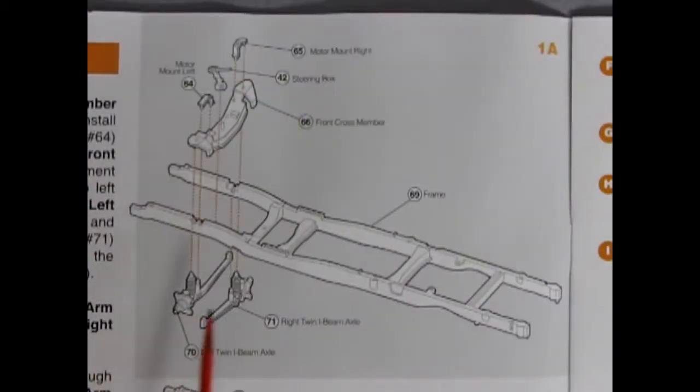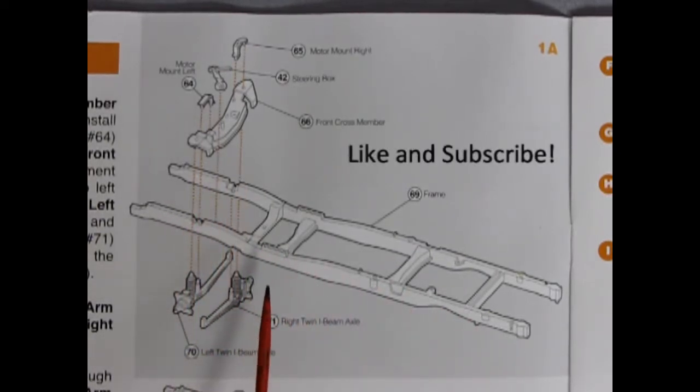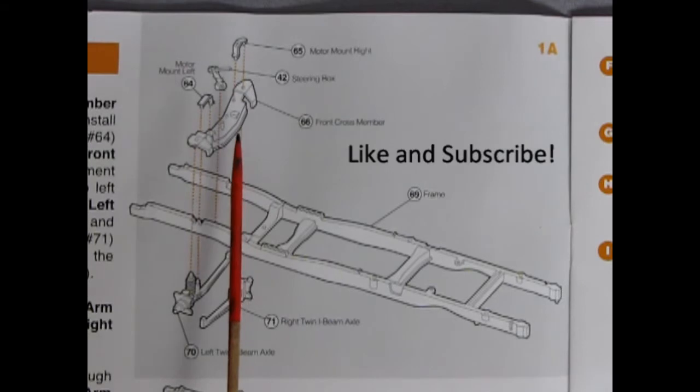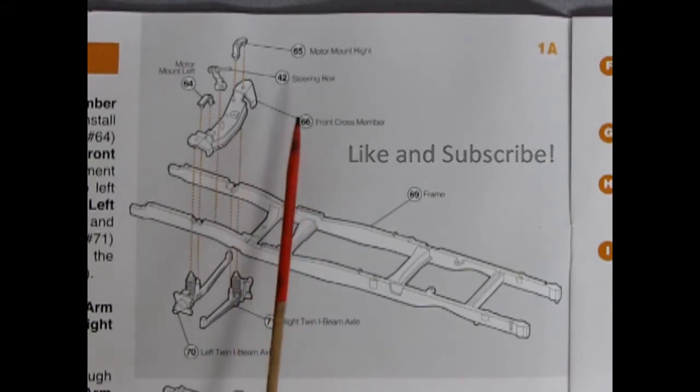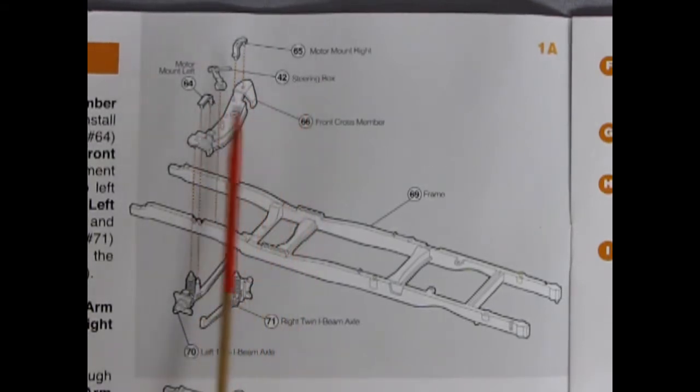Here we have the beautiful chassis. The frame here which reminds me of the same building style as the AMT 1953 Ford pickup truck. As you can see there are a lot of parts that go together. We've got our right twin I-beam axles, our front steering cross member, steering box, and motor mounts.